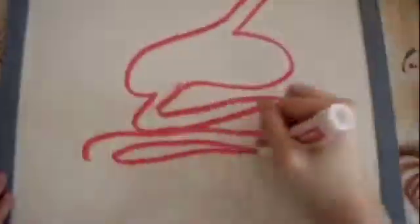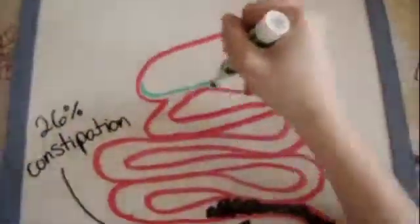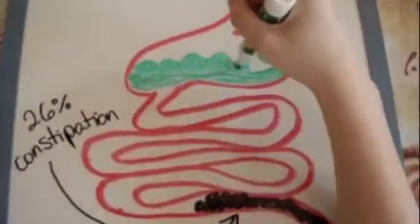26% of users become constipated because oxycodone can be used to relieve diarrhea, meaning it makes bowel movements more difficult. 14% vomit and 20% experience nausea.